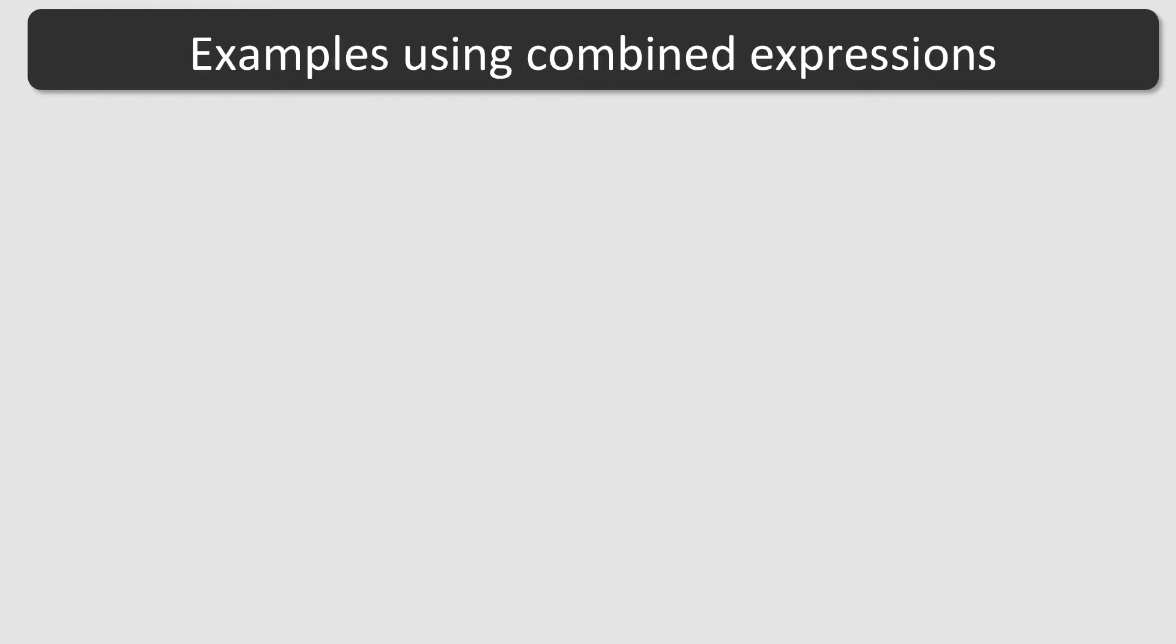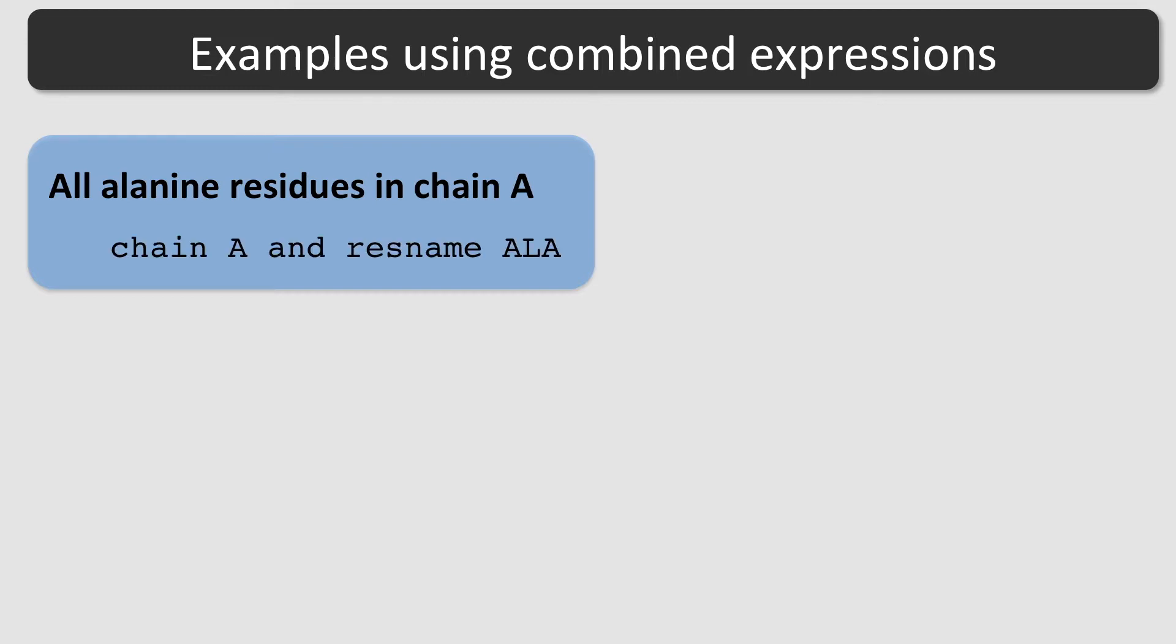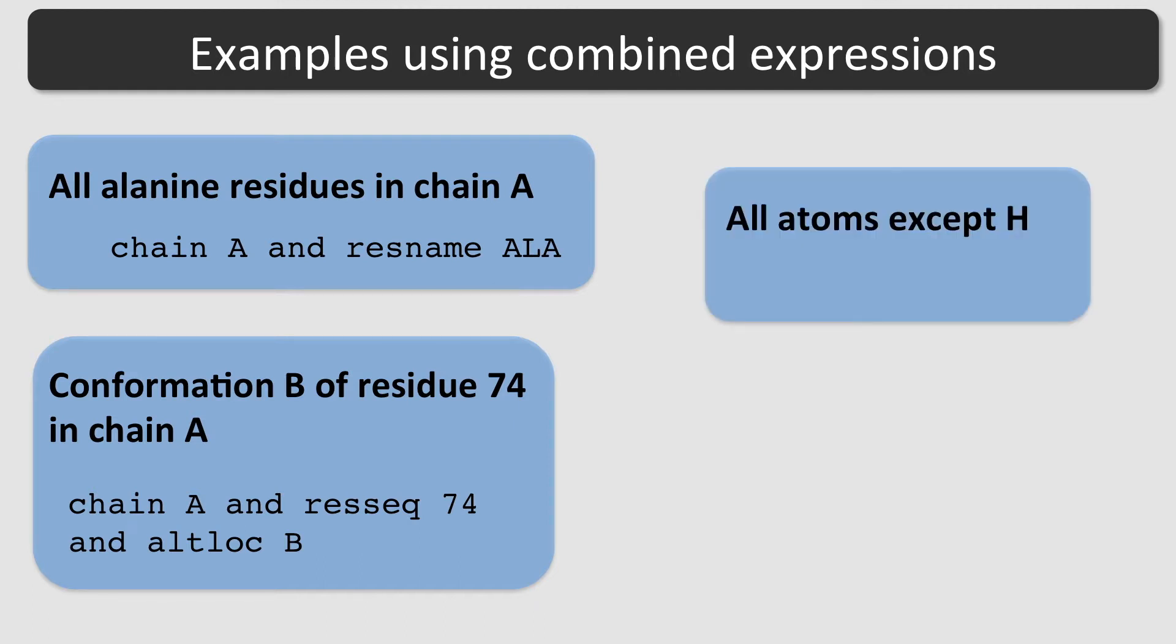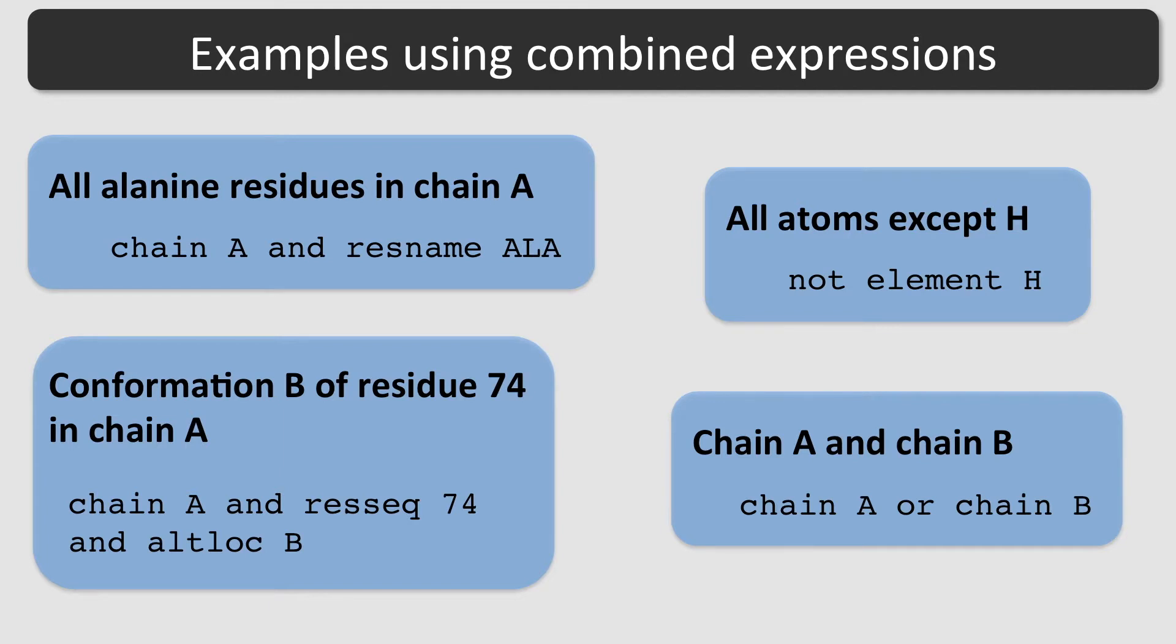Here are some examples of combined expressions using Boolean operators. To select all alanine residues in chain A, use chain A and resname ALA. To select alternative conformation B of residue 74 in chain A, use chain A and RSEC 74 and ALTLOC B. To select all atoms except hydrogen atoms, use NOT element H. To select chain A and B, use chain A or chain B.